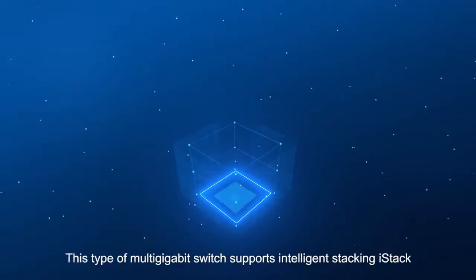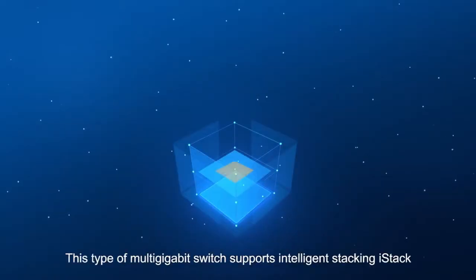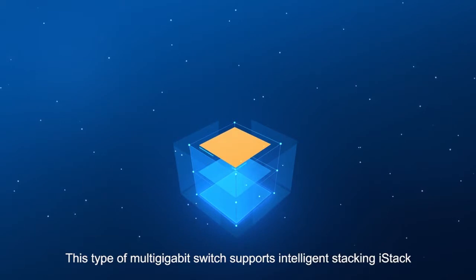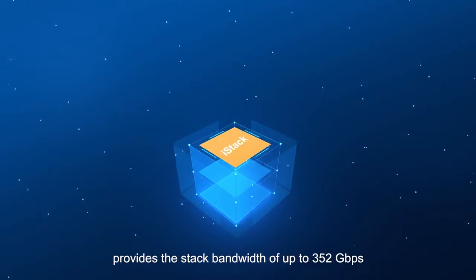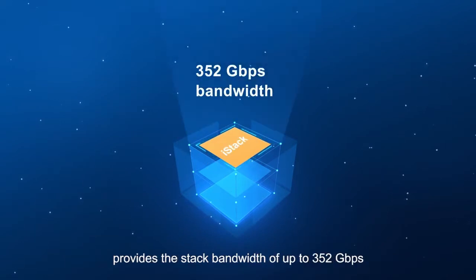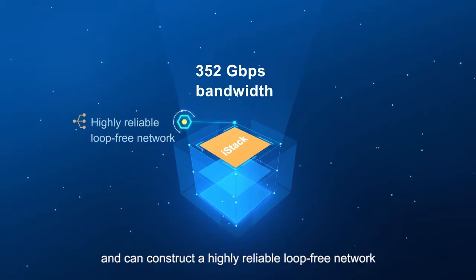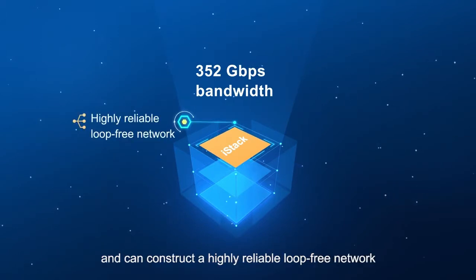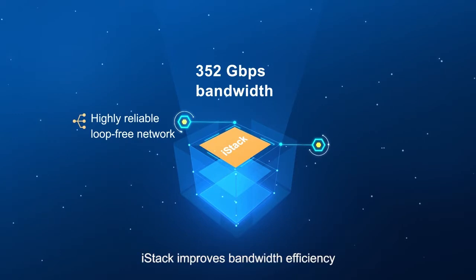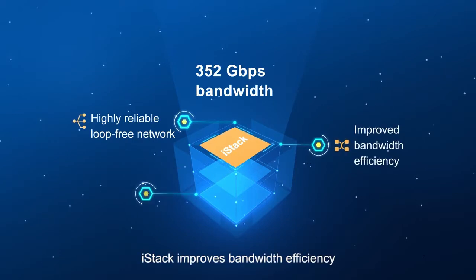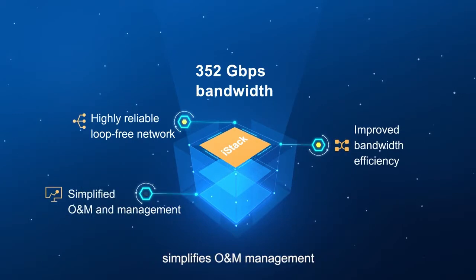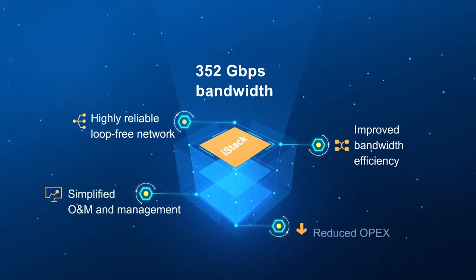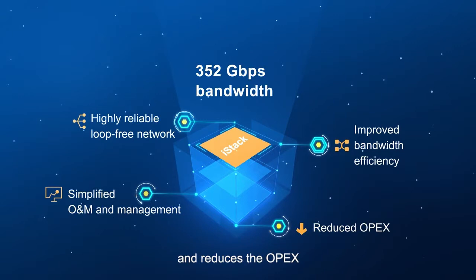This multi-gigabit switch supports intelligent stacking. iStack provides stack bandwidth of up to 352 gigabytes per second and can construct a highly reliable loop-free network. iStack improves bandwidth efficiency, simplifies O&M management, and reduces OPEX.